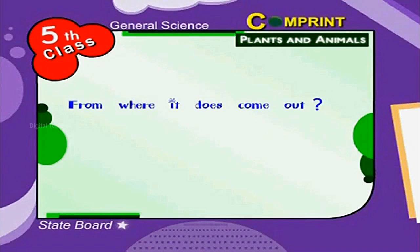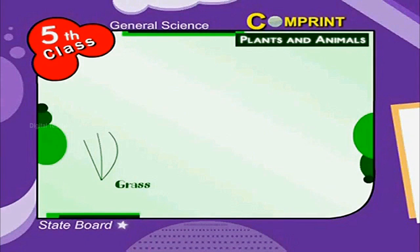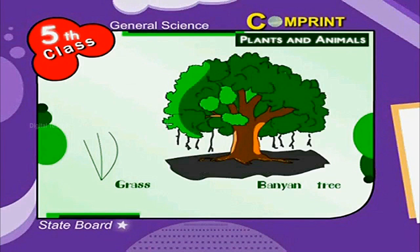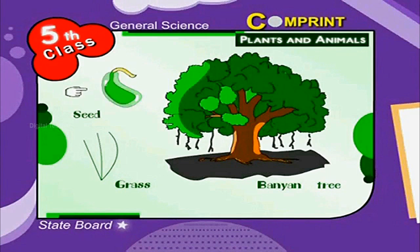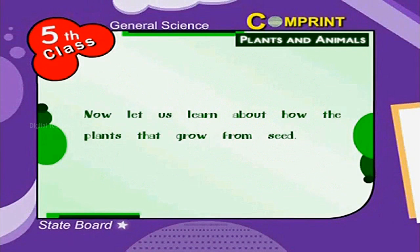From where does it come out? Even a blade of grass or a mighty banyan tree germinates, i.e., comes out from a seed. Now let us learn about how the plants grow from seed.